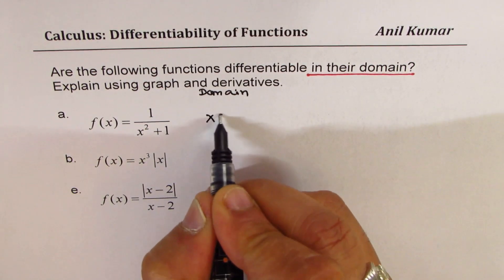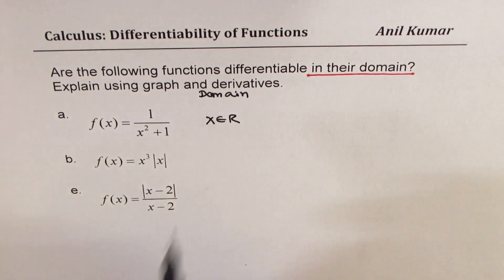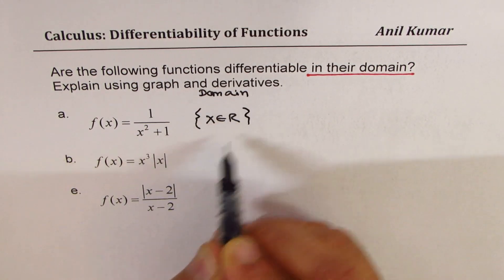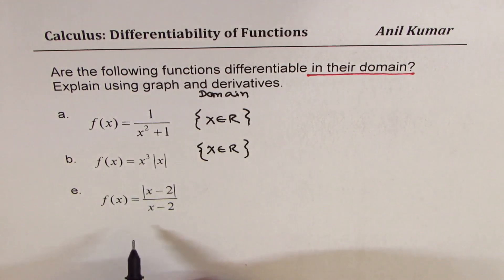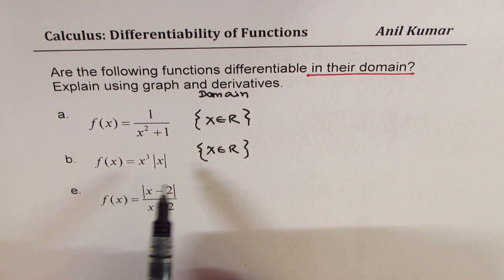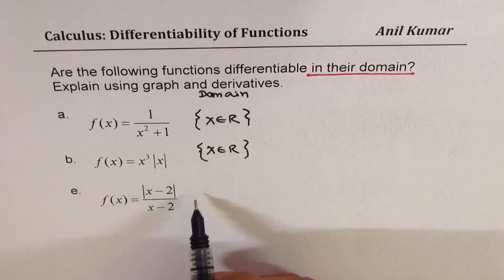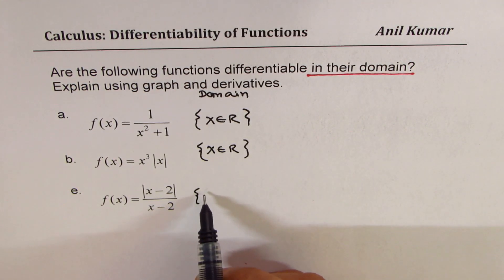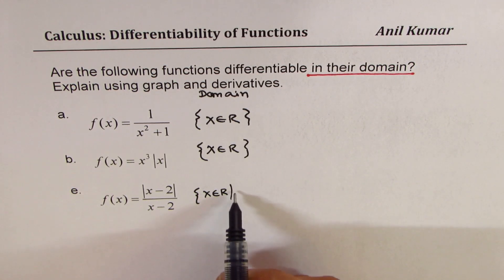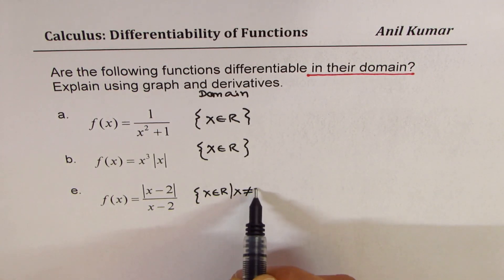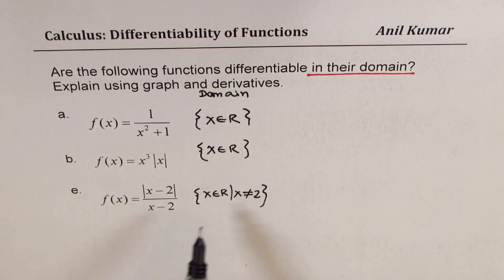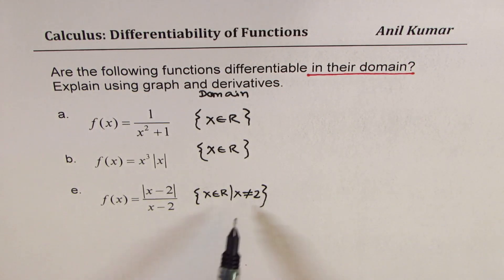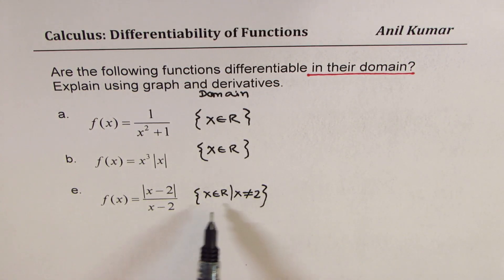For the first two functions, the domain is x belongs to real numbers, since there are no restrictions. However, for the third function, x belongs to real numbers but x is not equal to 2. So we know this function is not going to be differentiable at x equals 2 because that is not in its domain.